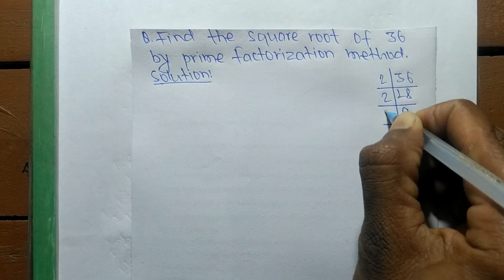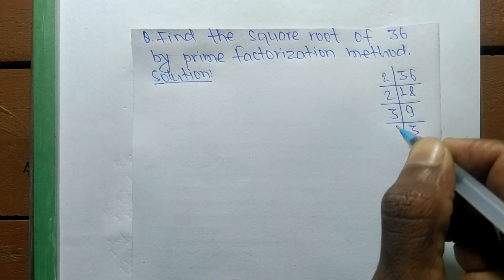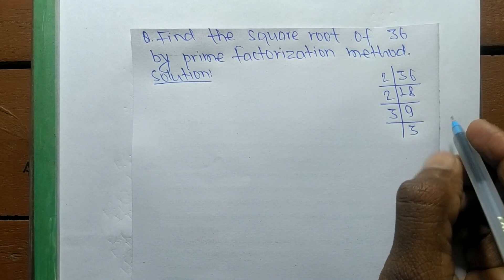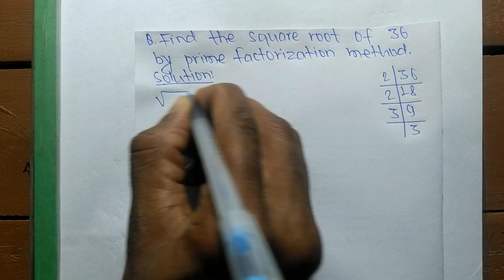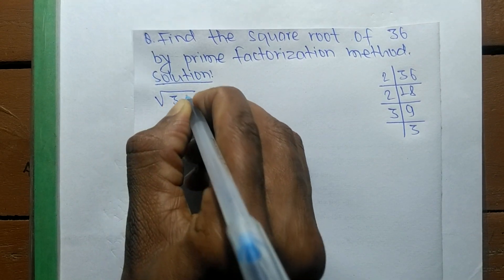Then 18 equals 2 times 9, and 9 equals 3 times 3. After finding out the prime factors, now we find out the square root of 36.